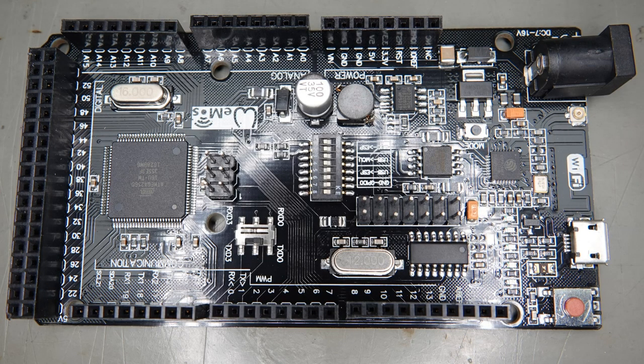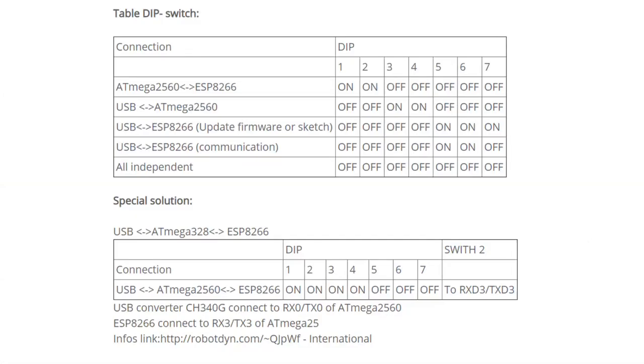And here we have a DIP switch which enables us to select the different connections like the ATmega to the ESP or USB to ATmega to program the sketch or USB to 8266 to upgrade the firmware or the sketch on the ESP and so on. And I think this one is probably the right one where you can program the ATmega and the ATmega can communicate with the ESP8266 like that.